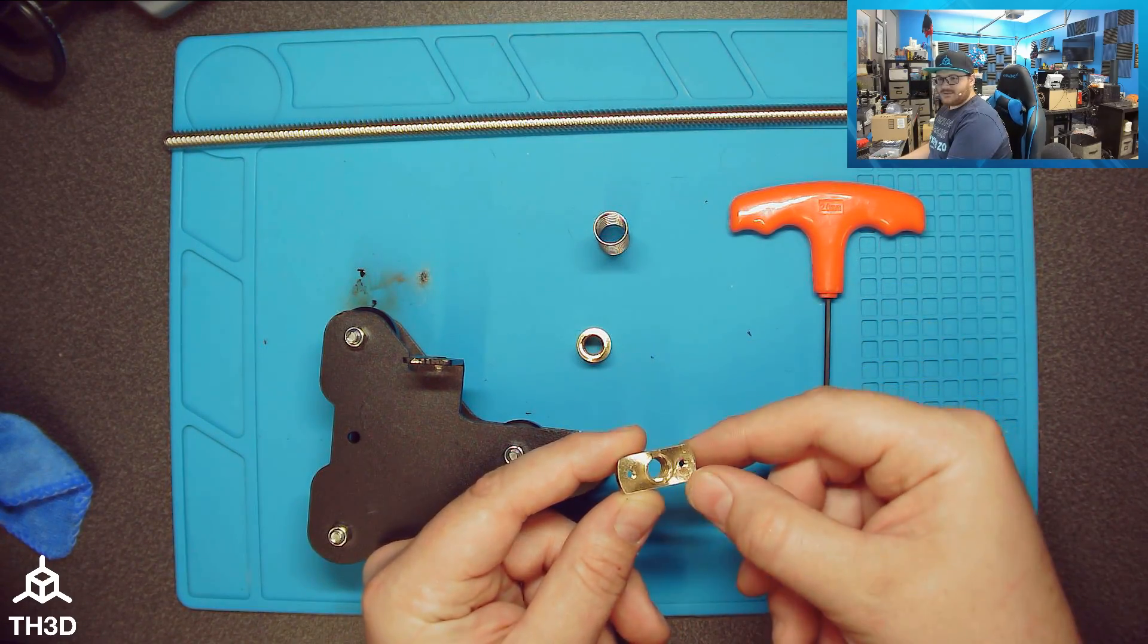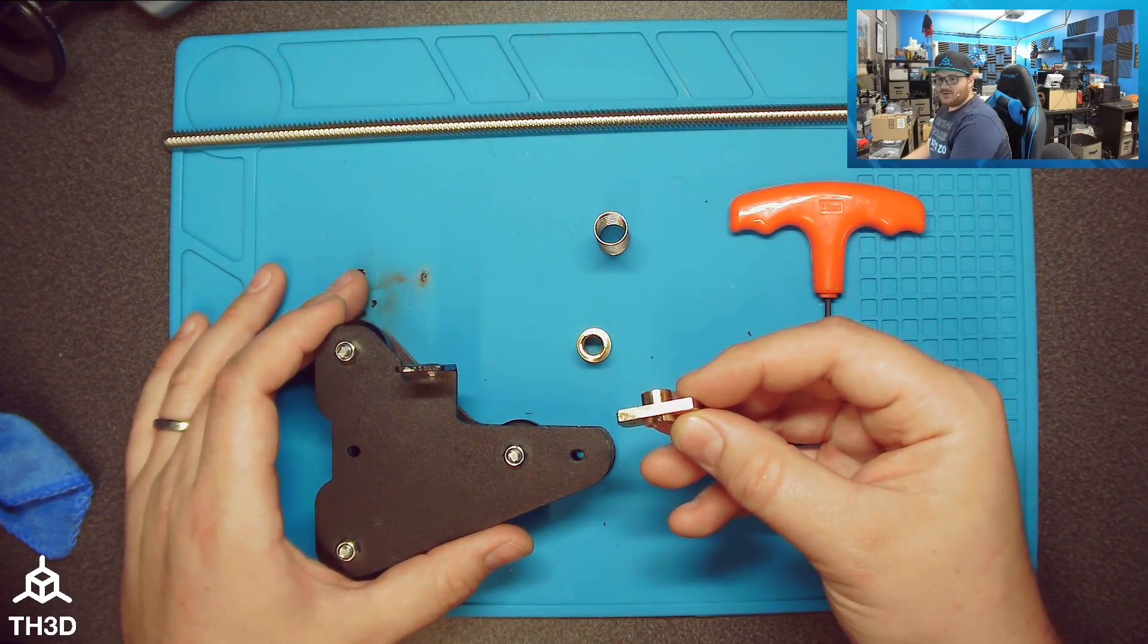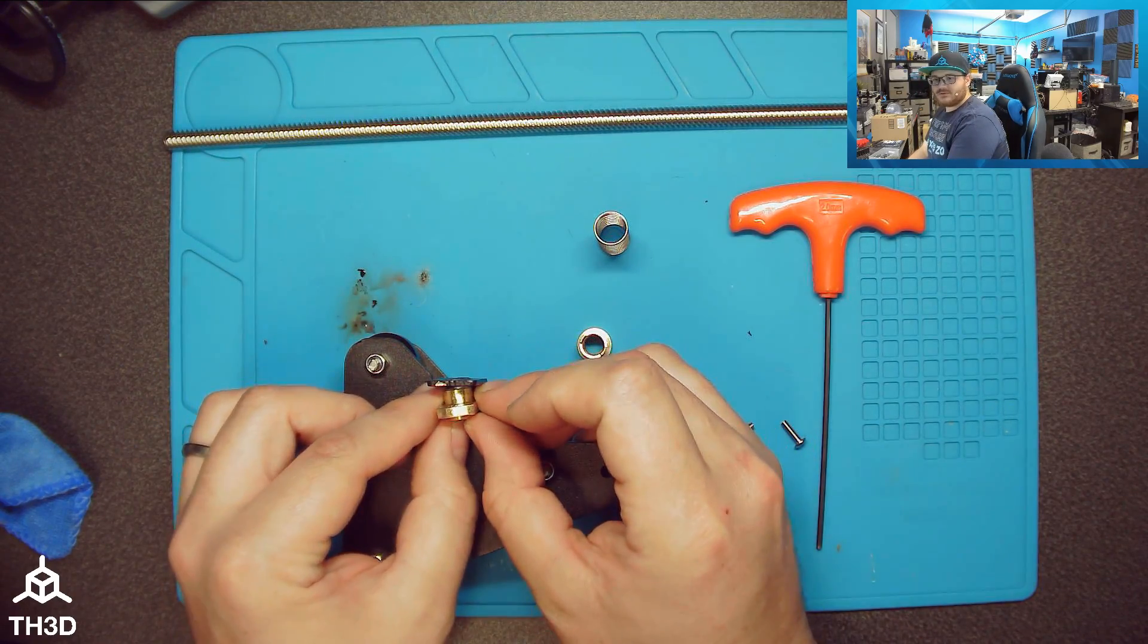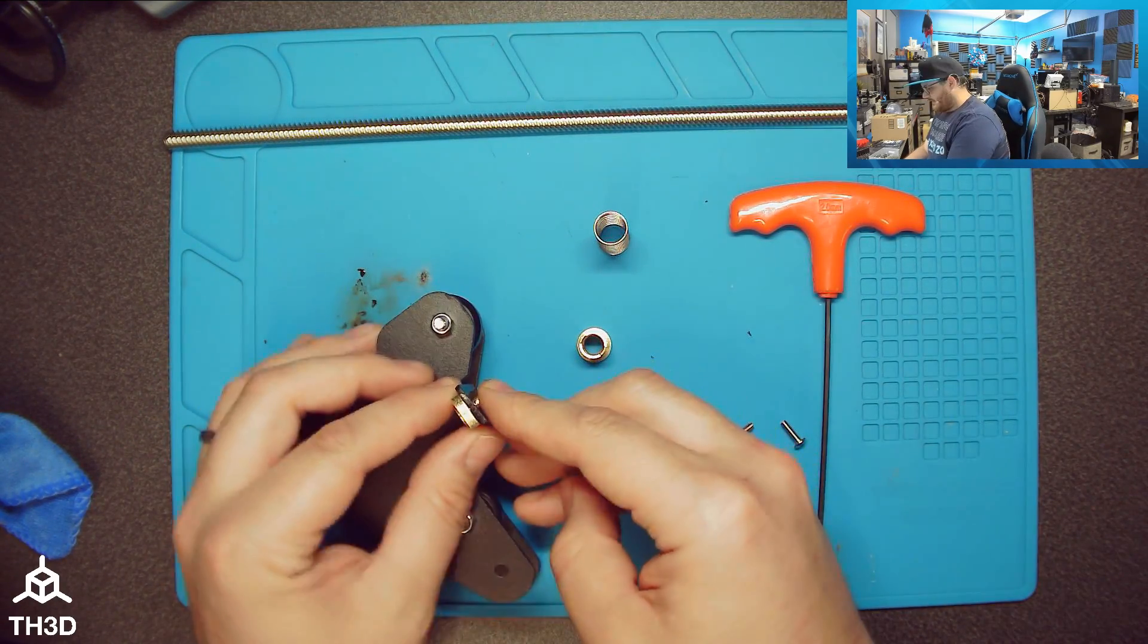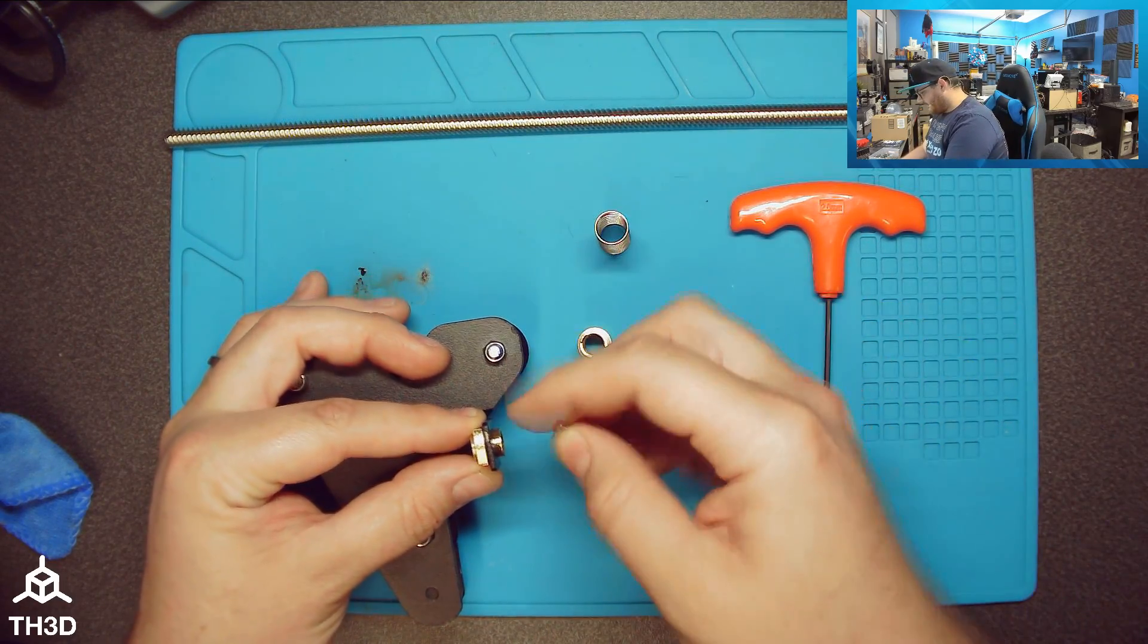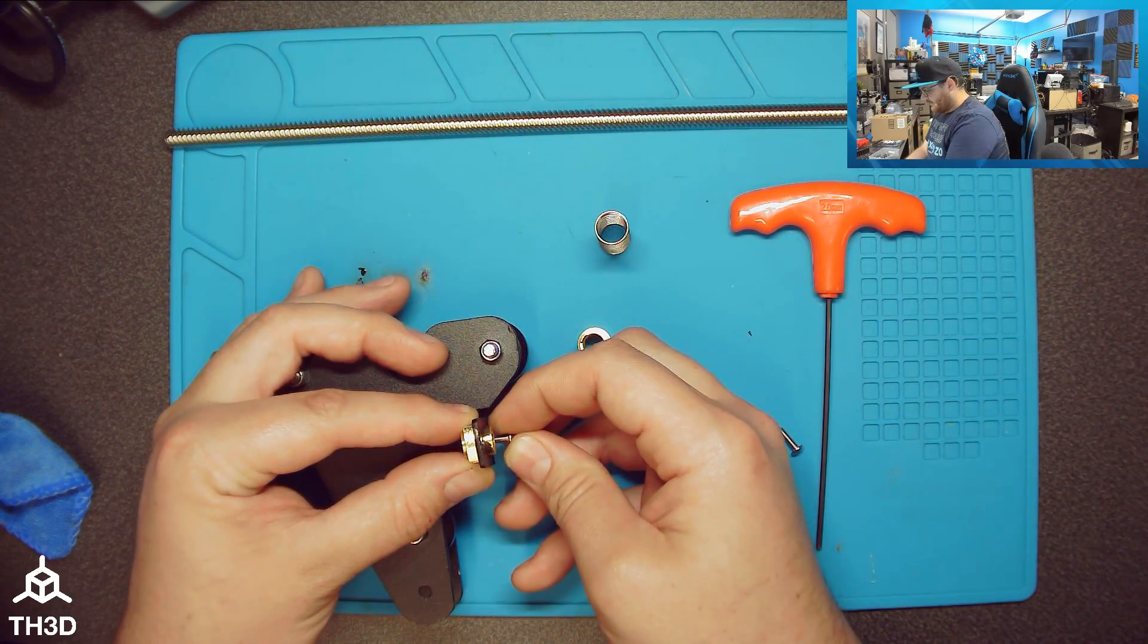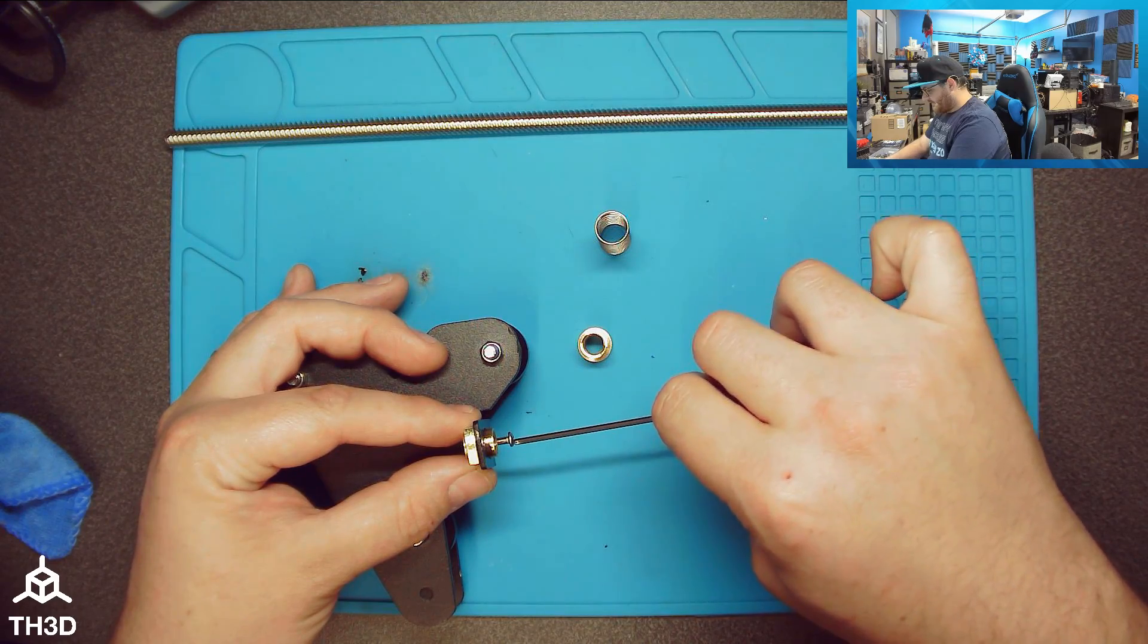When you install this top portion, you're going to want to take the longer piece and insert it through the bottom of your Creality bracket. Now that I have this in the Creality bracket, I'm going to put the screws in that I took off of my stock lead screw nut and thread them in.